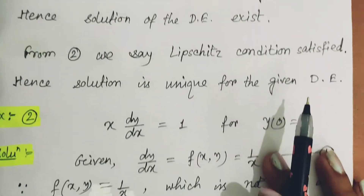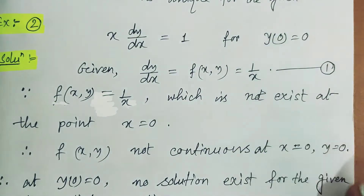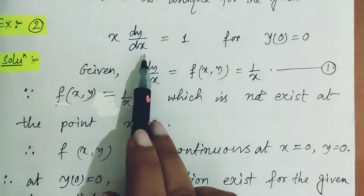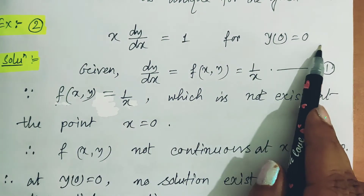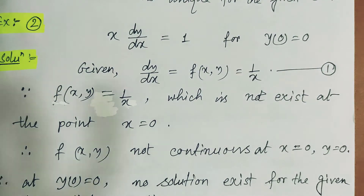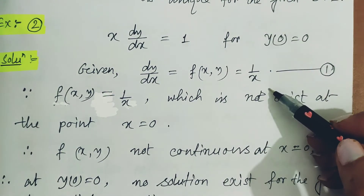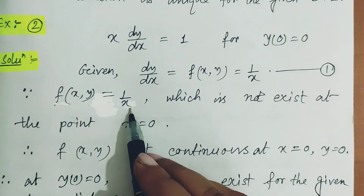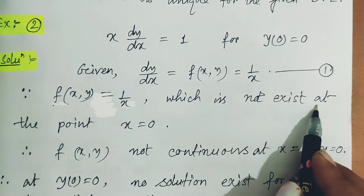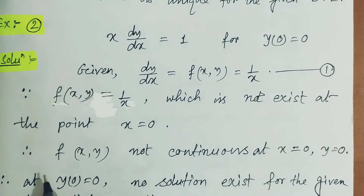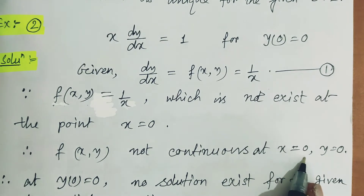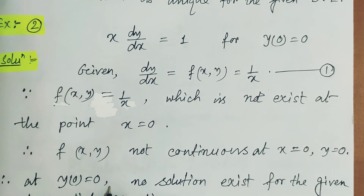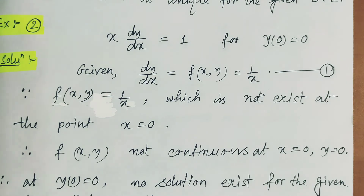Second example: x dy/dx = 1 with initial condition y(0) = 0. Here dy/dx = f(x,y) = 1/x, which does not exist at x = 0. Therefore f(x,y) is not continuous at x = 0, and at the initial condition y(0) = 0, no solution exists for the given differential equation.